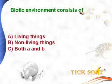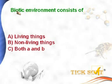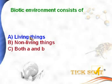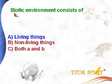Biotic environment consists of — options: (a) living things, (b) non-living things, (c) both A and B. Biotic environment means living environment, so biotic environment consists of living things. Option A is the answer. Similarly, abiotic environment consists of non-living things.